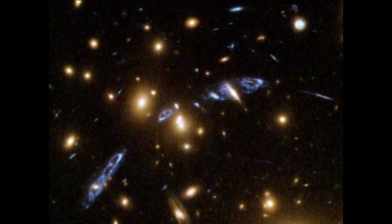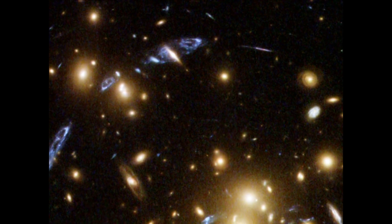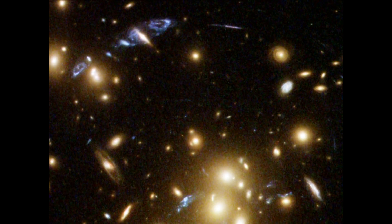So by mapping the distorted light, astronomers can deduce the mass of the cluster and they can trace the distribution of the dark matter within the cluster. This amazing image shows us some spectacular examples of faint background galaxies that have had their light bent by the cluster's strong gravitational field.